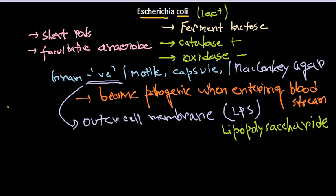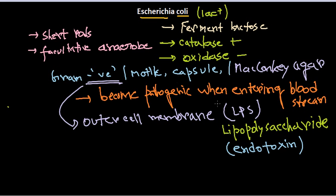The lipopolysaccharide layer is antigenic because it can serve as an endotoxin. This lipopolysaccharide is made up of several different components — one of the components is the O antigen. Depending upon the different kinds of antigen present in the lipopolysaccharide layer, we can divide Escherichia coli into different segments. Not only the antigen in the lipopolysaccharide, but also antigens present in the flagella and in the capsule. Antigens in the LPS layer are called O antigen.